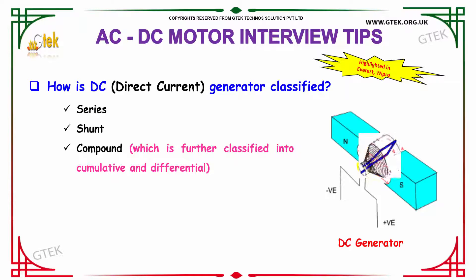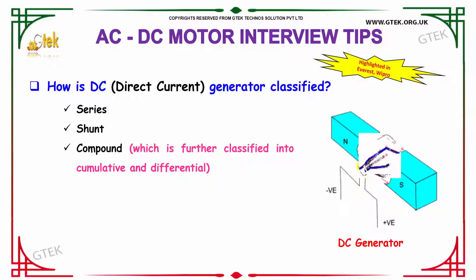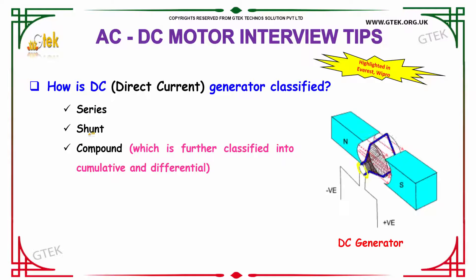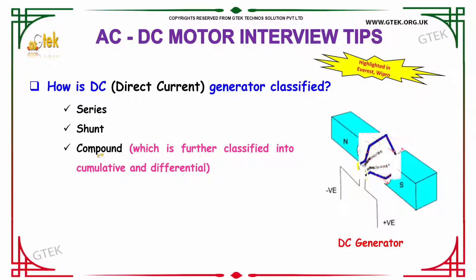How is direct current generator classified? The DC generator is classified as series, shunt, and compound. Compound is further classified into cumulative and differential.